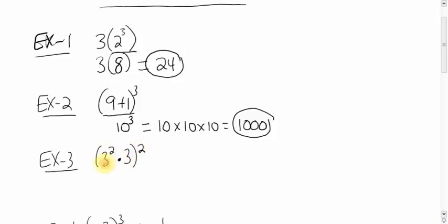Well, let's do what's in the brackets first. In the brackets, we've got an exponent. So 3 squared is 9. Let me do that first. So we have 9 times 3 all squared. That's in the brackets. 9 times 3 is 27 all squared.